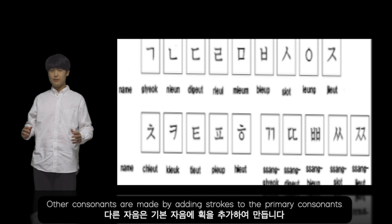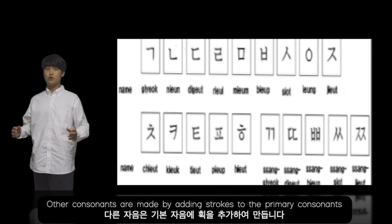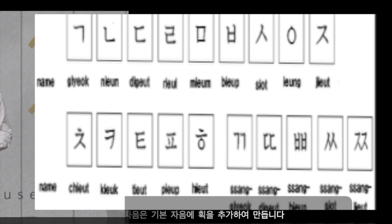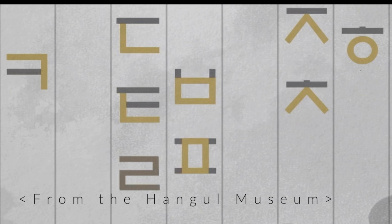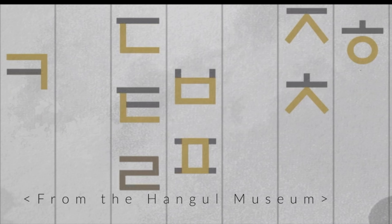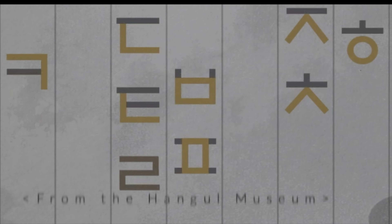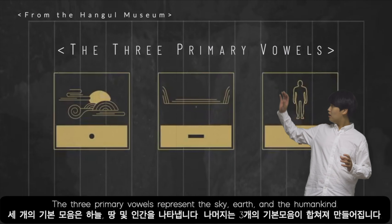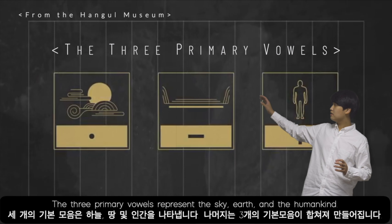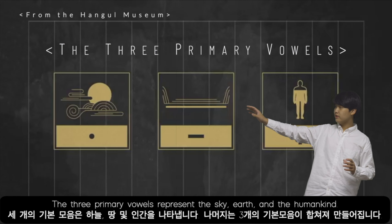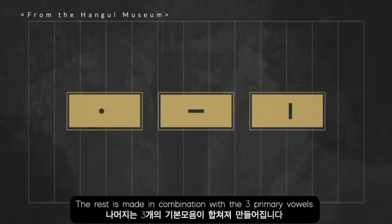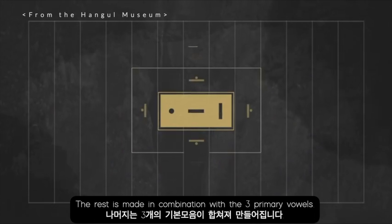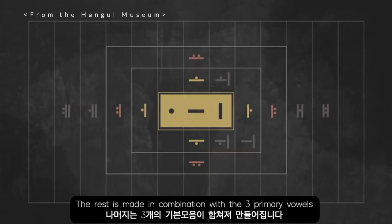Other consonants are made by adding strokes to the primary consonants. The three primary vowels represent the sky, earth, and humankind, and the rest are made in combination of these three primary vowels.